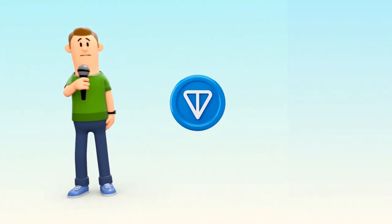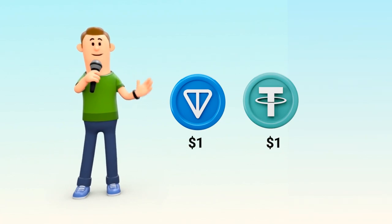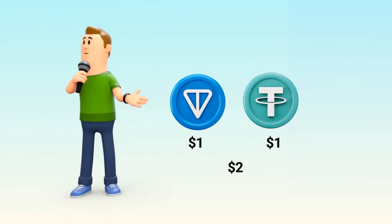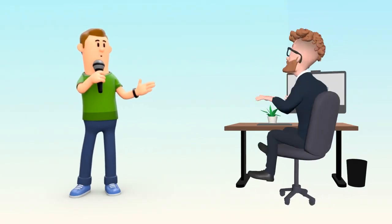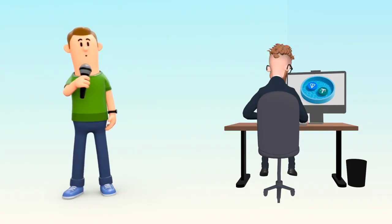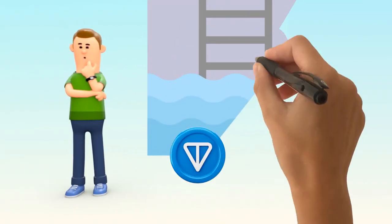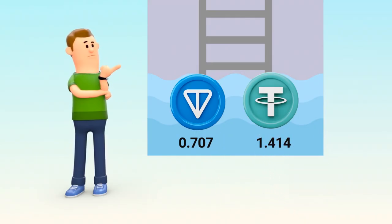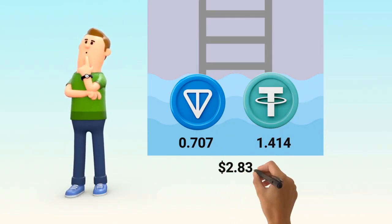For example, suppose one TON and one USDT are each worth one dollar when you deposit them, so your deposit total is two dollars. If TON's price doubles to two dollars, arbitrage traders will trade with the pool until the pool's token ratio reflects the new price. After rebalancing, your share becomes about 0.707 TON and 1.414 USDT.